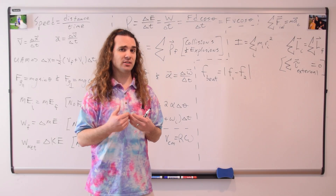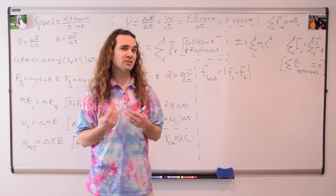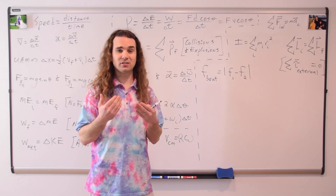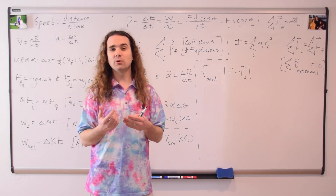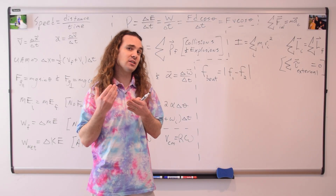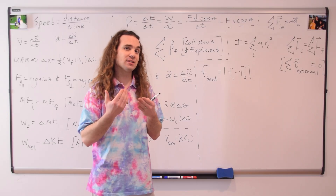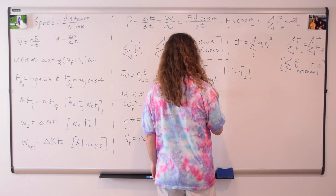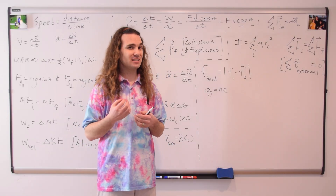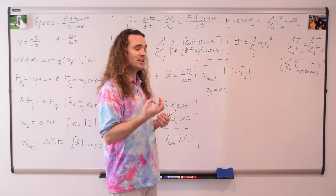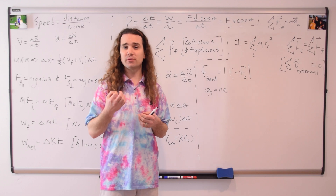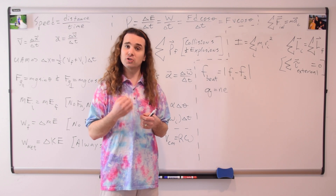The beat frequency heard when two sounds of similar frequency occur together is equal to the absolute value of the frequency of one minus the other. The net charge of an object is equal to the excess number of charges times the elementary charge of those charges.